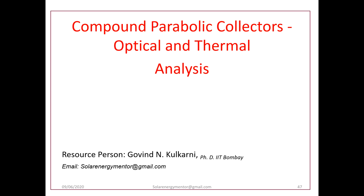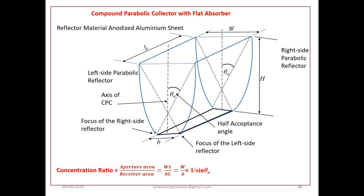In this lecture we will take a brief review of compound parabolic collectors' optical and thermal analysis. This is the sketch of a compound parabolic collector with a flat absorber. This has already been explained in the previous lecture, but I will briefly explain it again. A compound parabolic collector consists of two parabolic reflectors — this is the left side parabolic reflector.